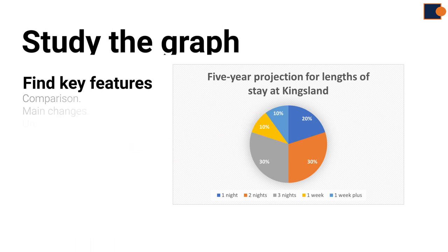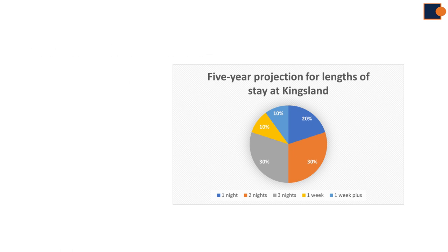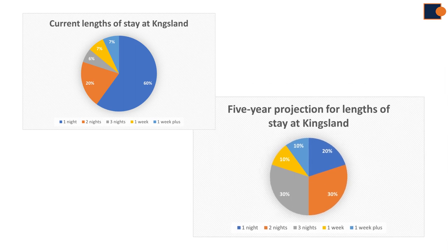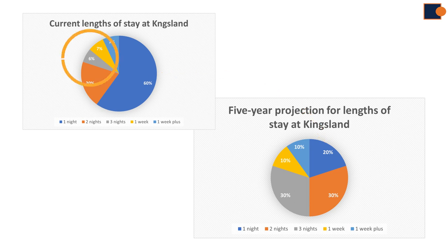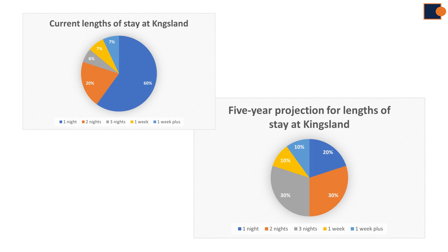Let's have a look at the main change. Once you have done the comparison, it can become much clearer to see the change. As you can see, one night stay has dropped significantly, from 60% to 20%. And shorter-term staying periods are all more than in the first pie chart. Now we can see a better picture of what these pie charts are showing us and their key features.